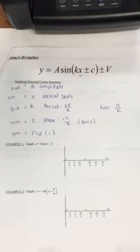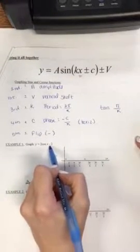Alright, so let's graph our first problem here. First of all, this has a vertical shift of negative 2.